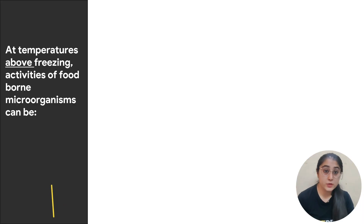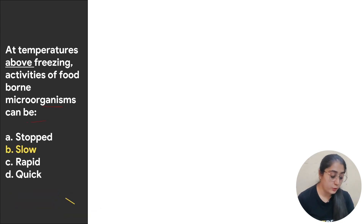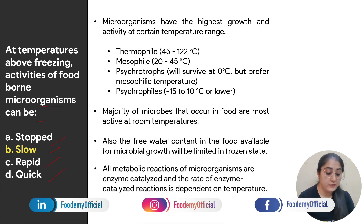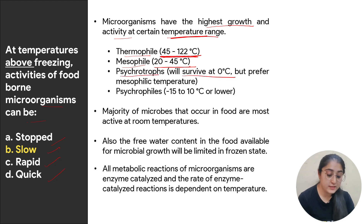The first question says: at temperatures above freezing, activities of foodborne microorganisms can be — options are stop, slow, rapid, or quick. As we know, microorganisms have the highest growth and activity at a certain temperature range. For example, thermophiles are more suitable at 45 to 122 degrees Celsius, mesophiles grow easily at 20 to 45 degrees Celsius, psychrotropes survive at 0 degrees Celsius but prefer mesophilic temperature.